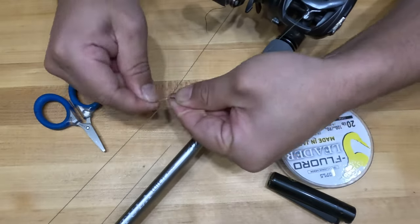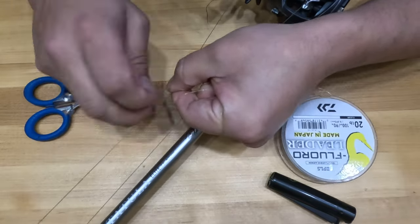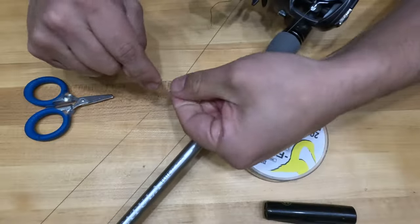I typically like to wrap about 15 to 20 times, but for me, I have found 20 is the perfect amount of wraps for the perfect FG knot.